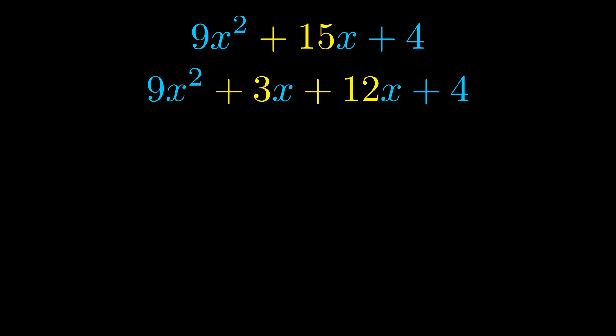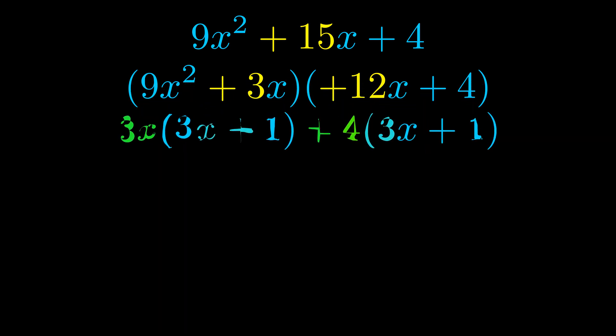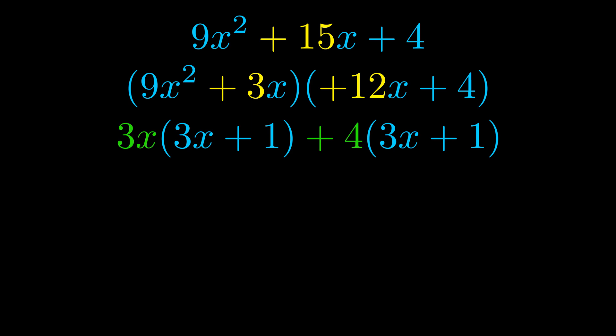Once we've done this we go ahead and we put parentheses around the first term and the last term, and we do that so that we can take the greatest common factor out of both terms. We can see the greatest common factor is now outside in green.